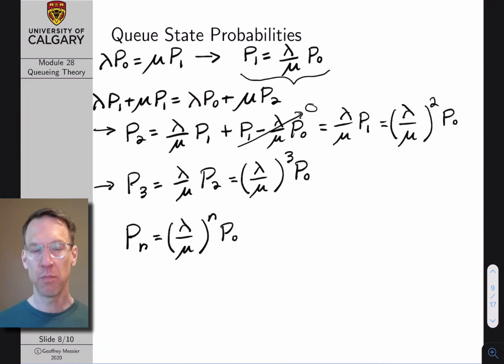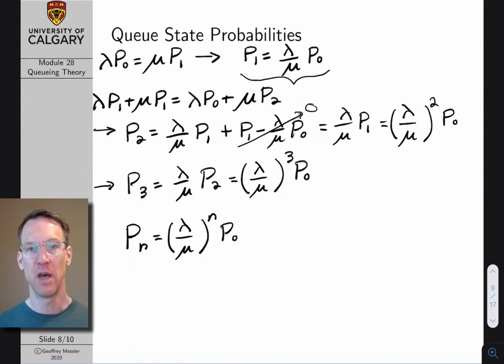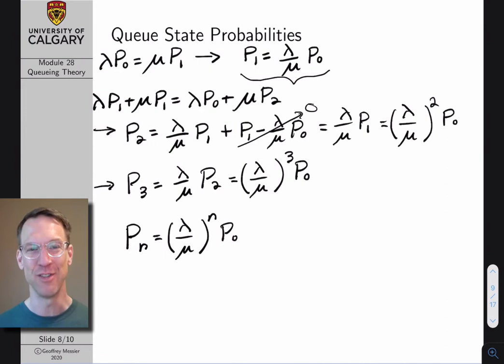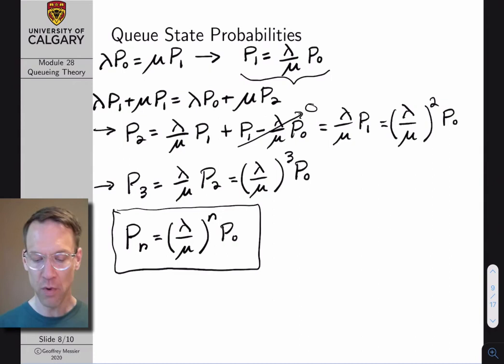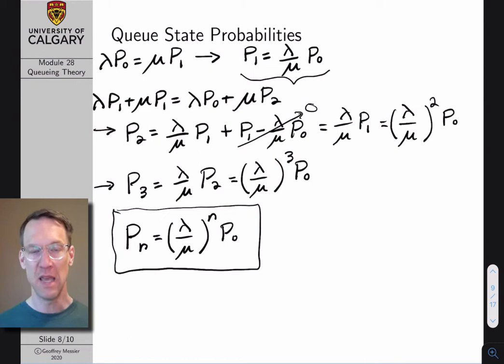We'll consider two scenarios: the infinite-length queue and the finite-length queue. For the final equation we need, we turn to fundamental probability theory. We're guaranteed to be in one of the states in our state diagram — states represent all possible outcomes — and since they're mutually exclusive, their probabilities must sum to 1. This normalization condition is our final equation. We'll consider the infinite queue first as a stepping stone; its equations are simpler and useful for assignments and exams, even though the finite queue is more practical.